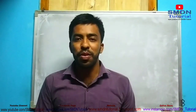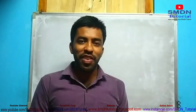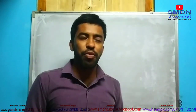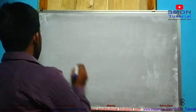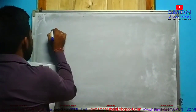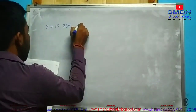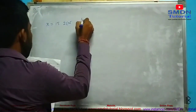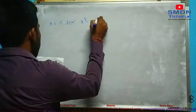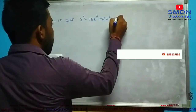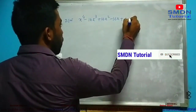Question 2: x is equal to 15. We have x to the power 4 minus 16x cubed plus 16x squared minus 16x plus 45.